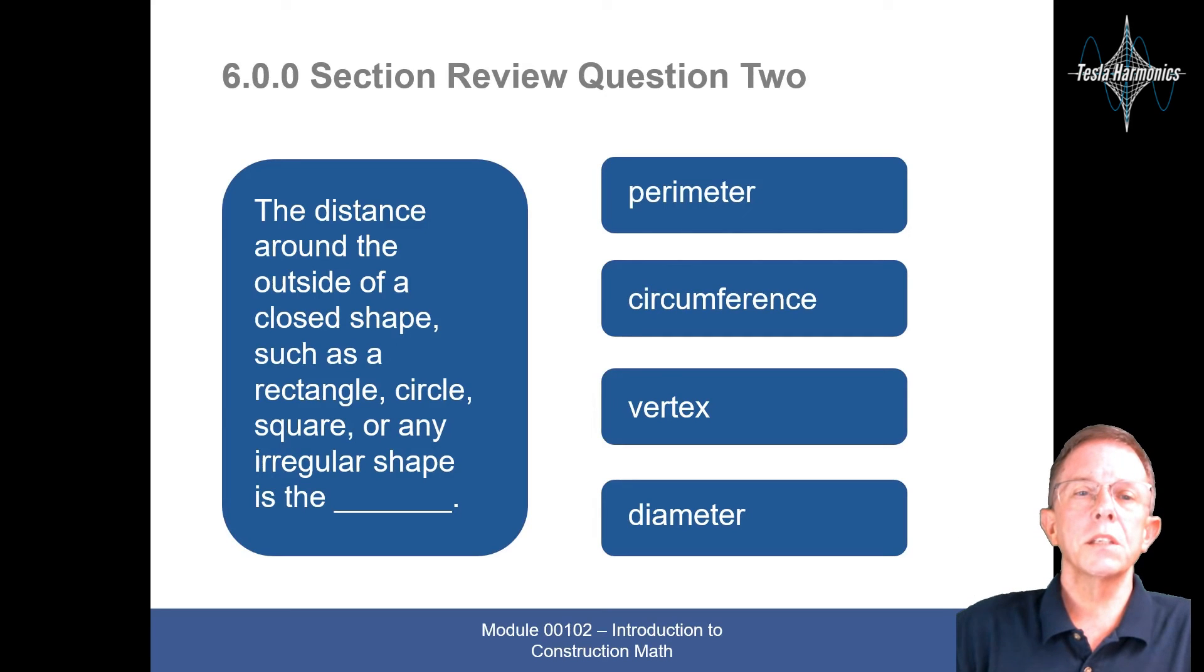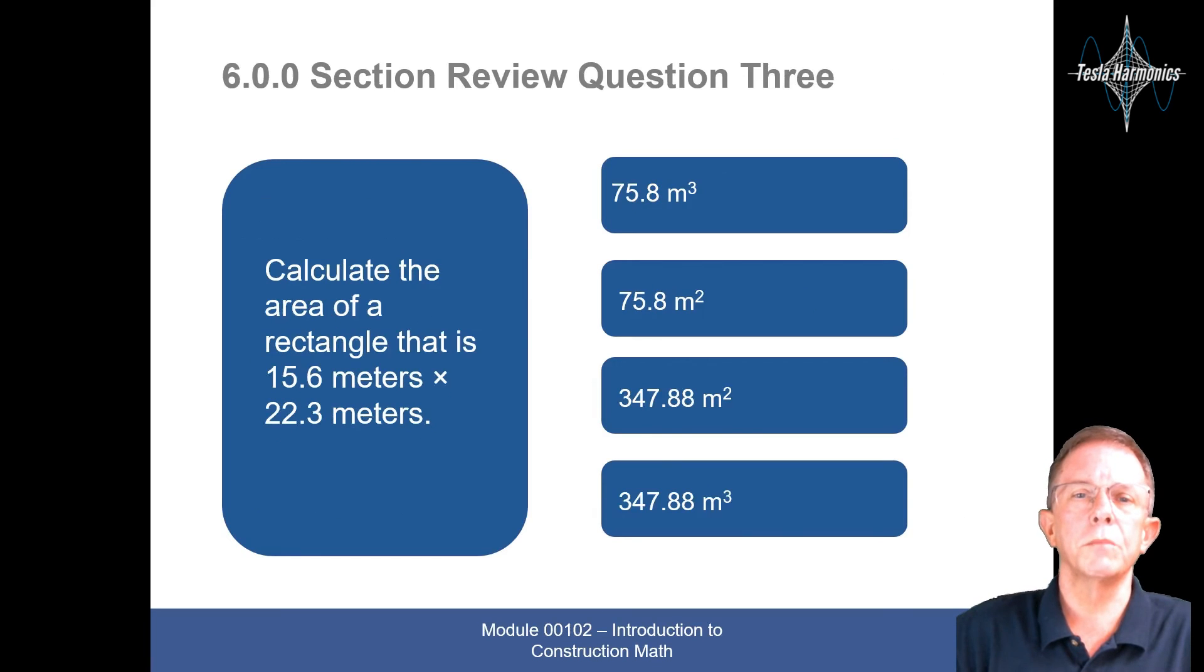The distance around the outside of a closed shape, such as a rectangle, circle, square, or any other regular shape, is the perimeter, circumference, vertex, or diameter. That would be the perimeter.